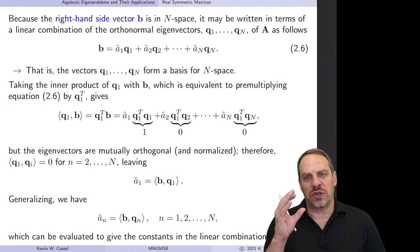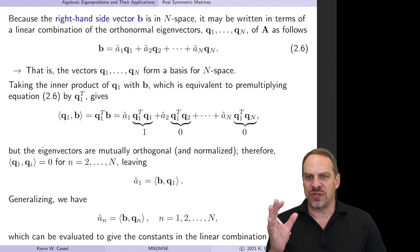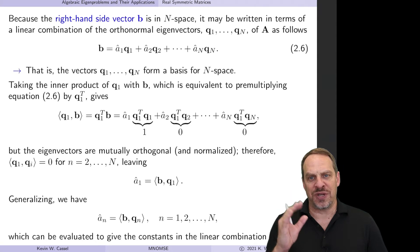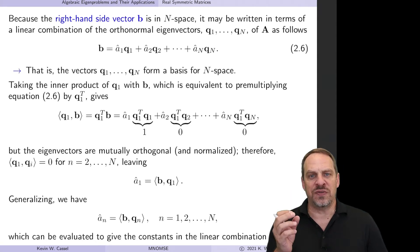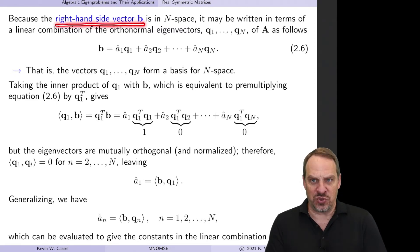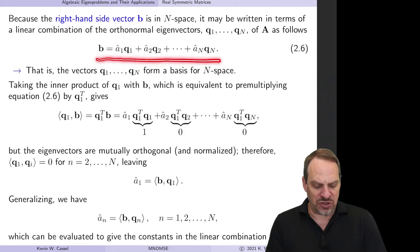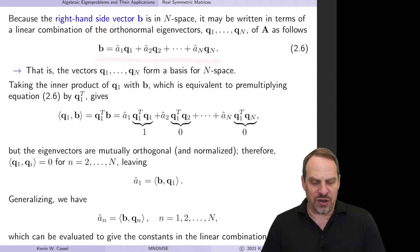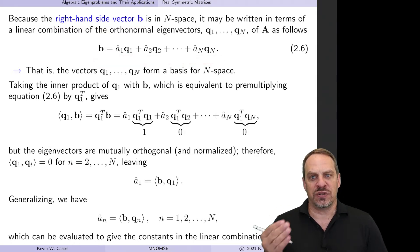We're going to use a concept from Chapter 1 which at the time didn't seem terribly important — it seemed kind of parenthetical — and that is the idea of a linear combination. We're going to write the right-hand side vector B, which we know, as a linear combination of the orthonormal eigenvectors of A.